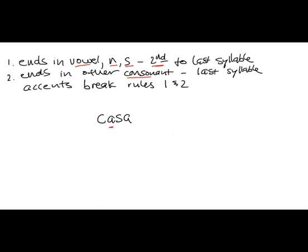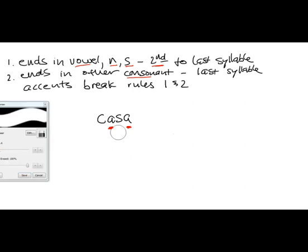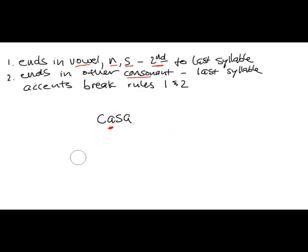So where is the stress — is it casa or casa? It is, of course, casa. Now, does this word fit our rules? It ends in a vowel — it ends in A — so it should fit rule number one. If it ends in a vowel, N or S, the stress should be on the second to last syllable. This is the last syllable and this is the second to last syllable. So it does fall where it should fall: casa. In that case, it does not need a written accent.